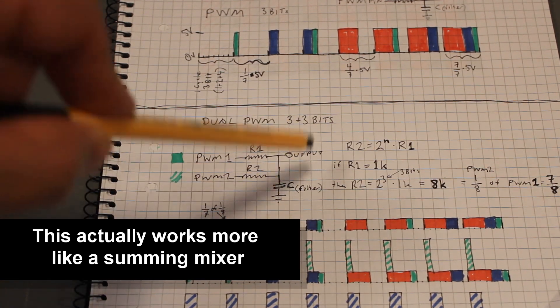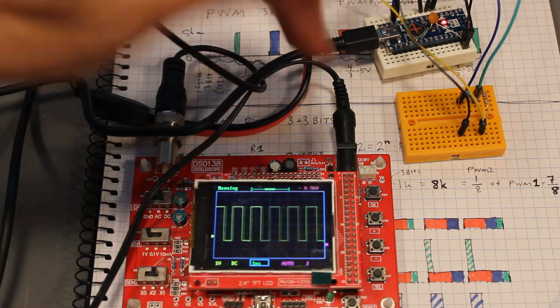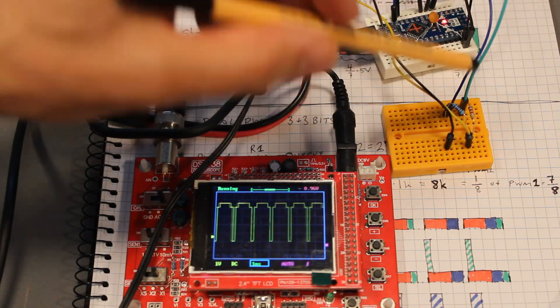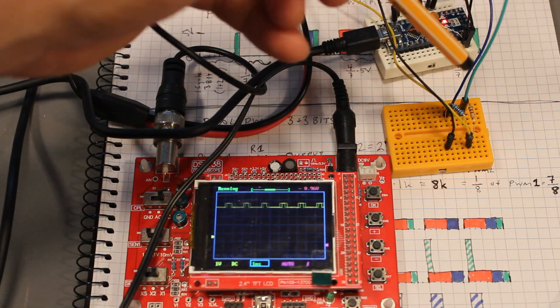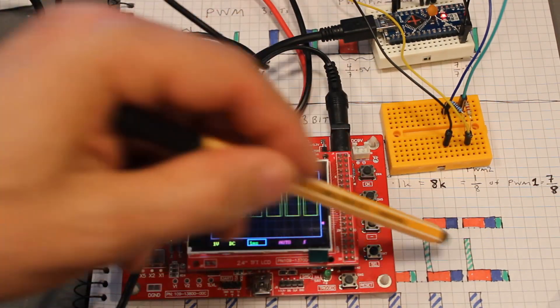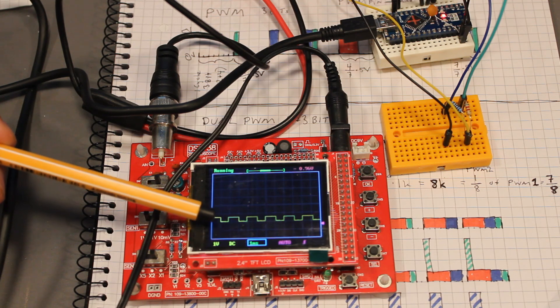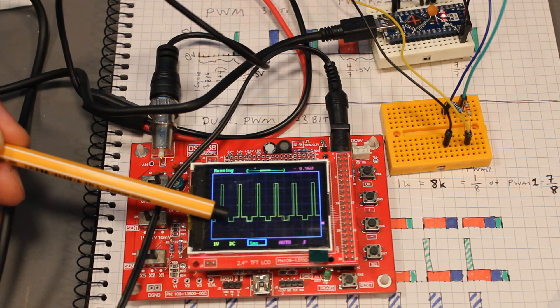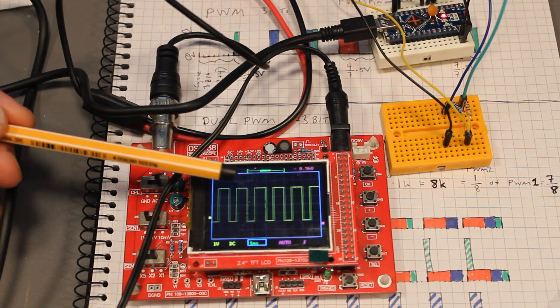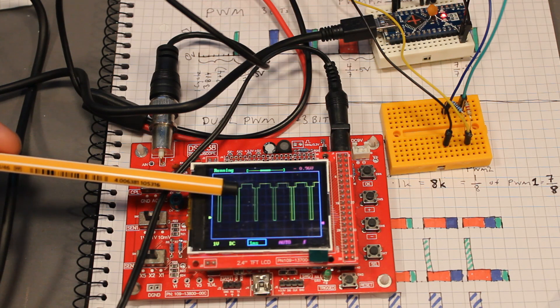Here is the example sketch for this. We have two outputs, two PWM outputs pin 9 and 10, we have one 1k resistor and one 8k resistor, or 8.2 actually. What you see down here is the least significant bits starting here counting up to seven, adding a one, then counting up to seven again, adding the two, adding the three, adding the four, adding the five, and so on until we are up at fully right there.